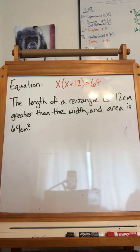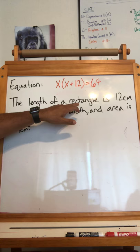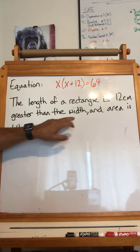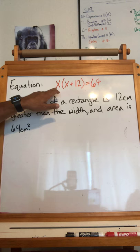Okay, here's our equation, or our problem. There's a word problem: the length of a rectangle is 12 centimeters greater than the width, and the area is 64 centimeters squared.